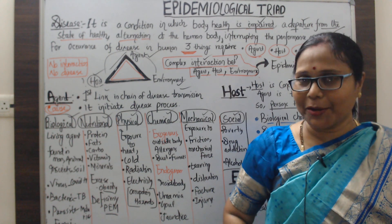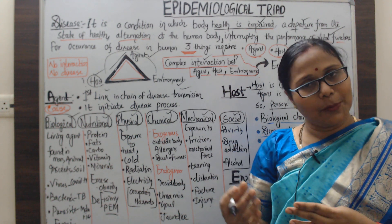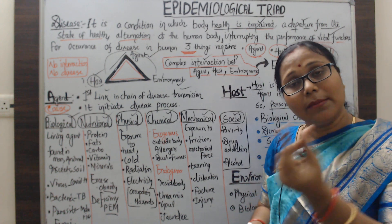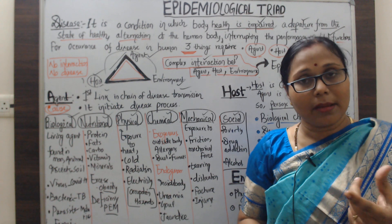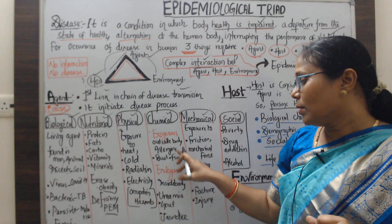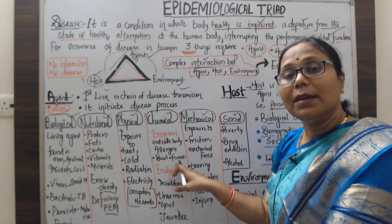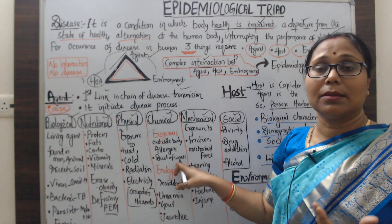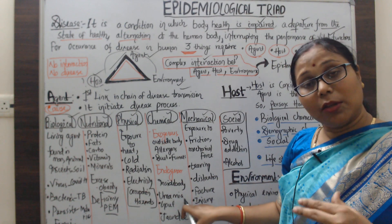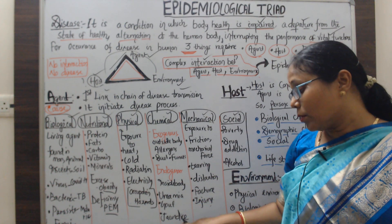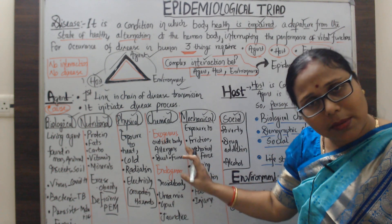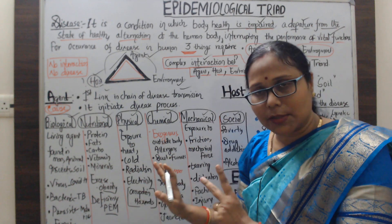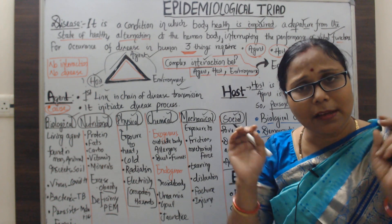The fourth category is chemical agents, which are of two types: endogenous (inside the body) and exogenous (outside the body). Inside the body, chemicals like uric acid, urea, and bilirubin are present for smooth body function. When uric acid levels increase, gout arises; excess urea in blood causes uremia; decreased bilirubin handling leads to jaundice. External chemical agents include insecticides (in agricultural workers), allergens, dusts, and fumes — these affect the body from outside.